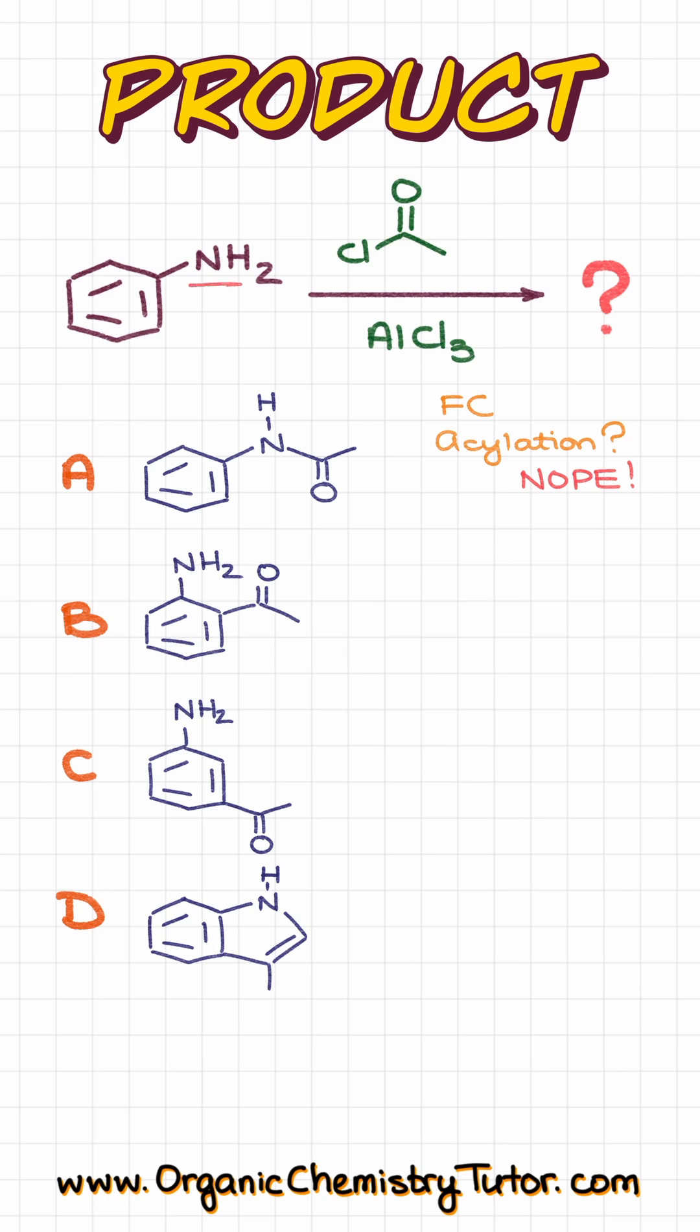First of all, nitrogen in aniline is extremely active and nucleophilic, so it is going to be actively destroying our Lewis acid catalyst by making a complex with that.